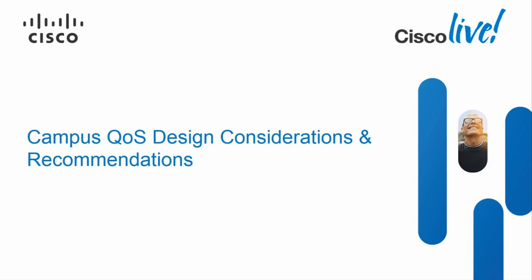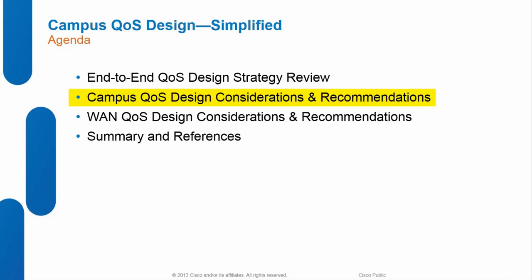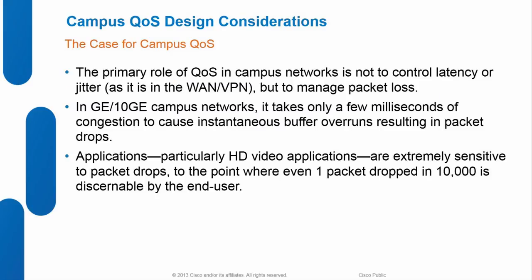The first thing we need to do is convince you that campus QoS is important. Most people think, 'I have 10-gig or 1-gig channels — how could I possibly drop traffic? I'm not worried about latency.' And the reality is you're not worried about latency; you're more worried about loss. Latency and jitter aren't the big concern at 10 gig, but in 1- and 10-gig campus networks it takes only a few milliseconds to congest the link. We want to make sure we schedule traffic appropriately, especially HD video like telepresence.